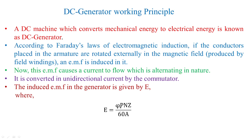In this equation, P stands for the number of poles, Z stands for the number of conductors placed in the slots of the machine, and E is the induced voltage.